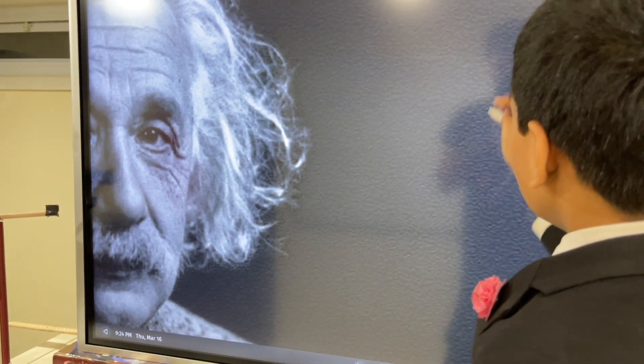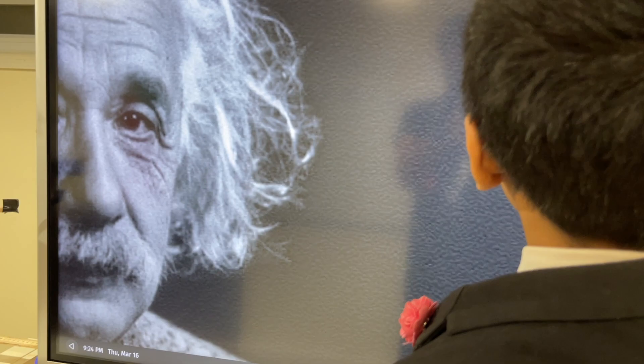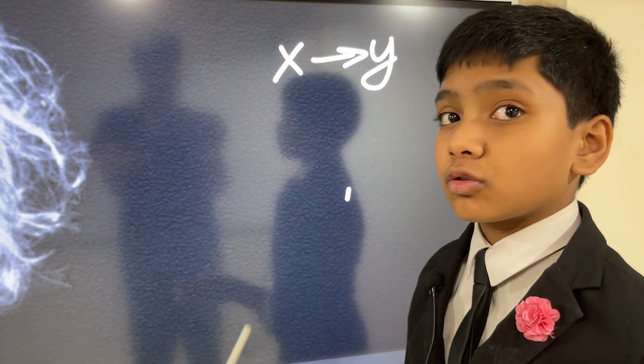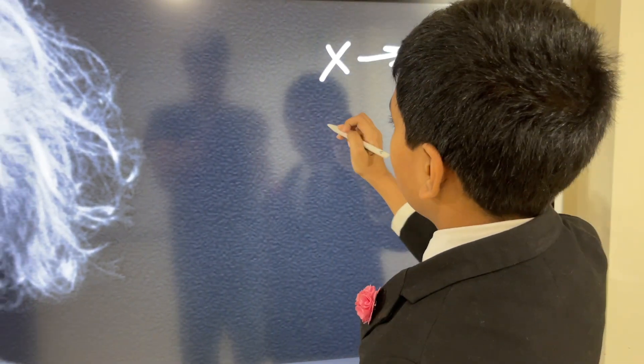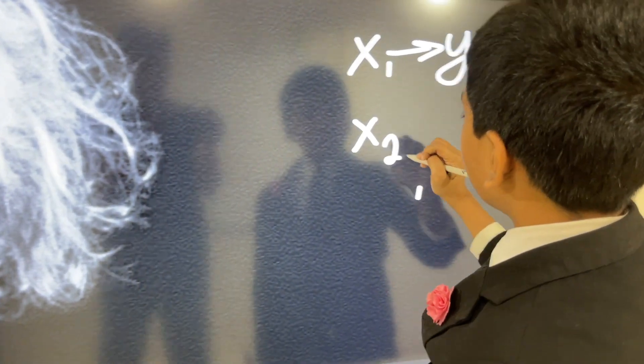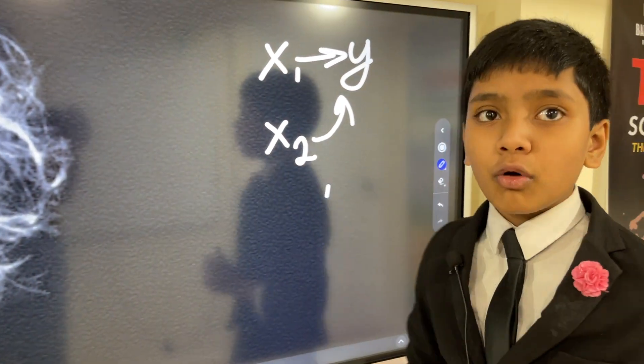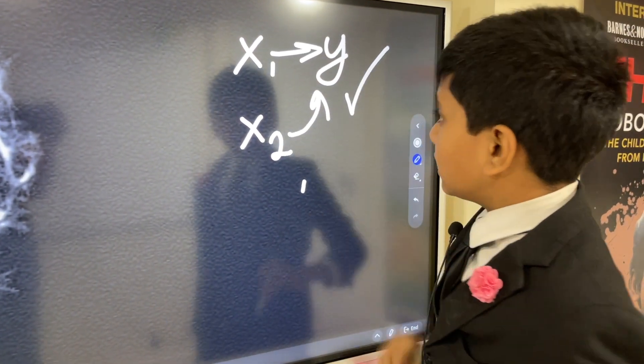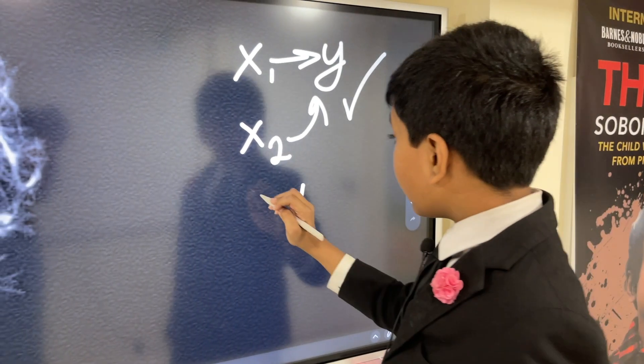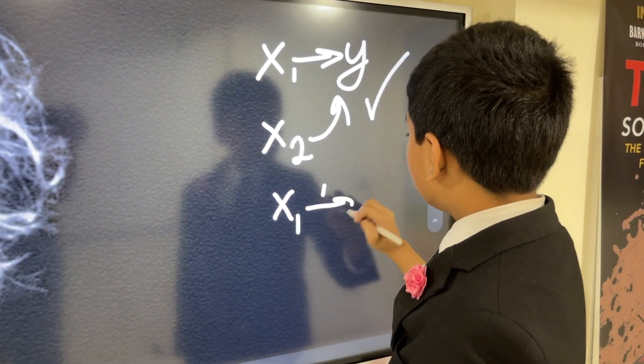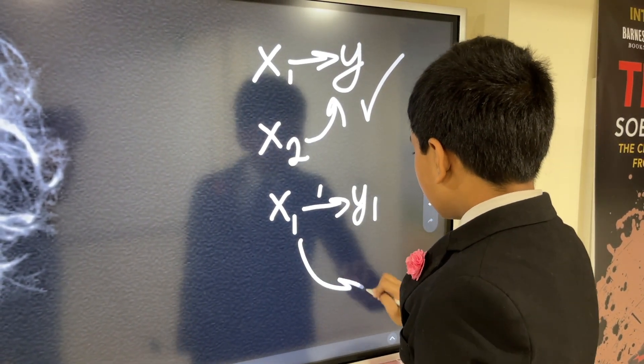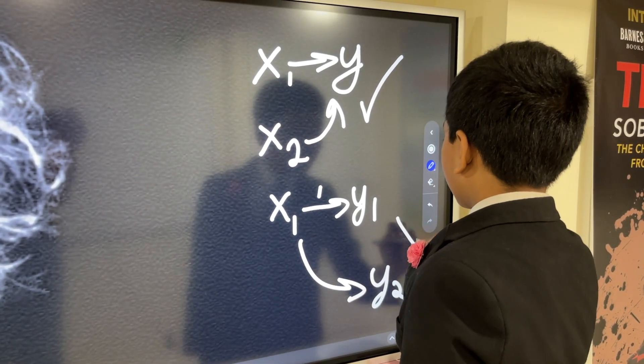First of all, a function is basically something that gives one input, one output. Now, sometimes that might be two or three or however many inputs per output. If two inputs give you the same output, don't worry, this is still a function. But, if one input gives you two outputs, that is not a function.